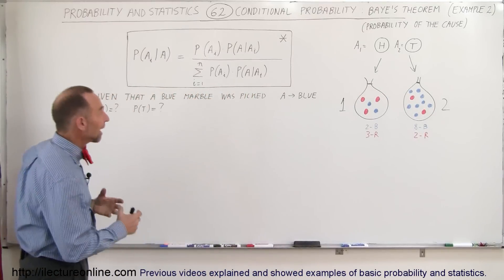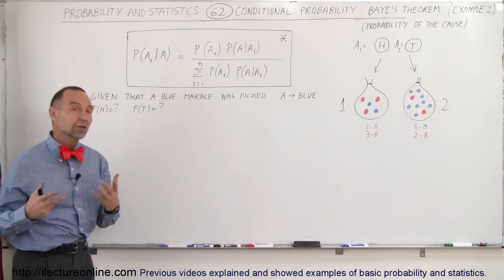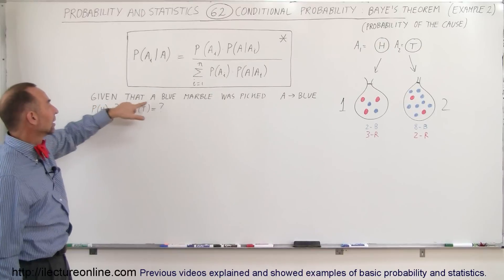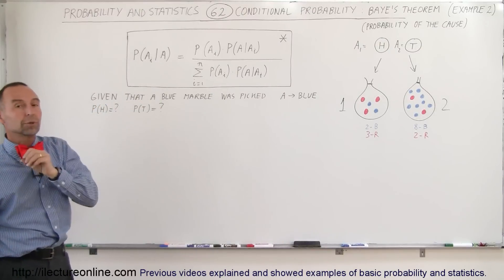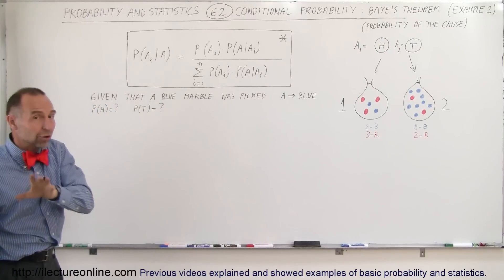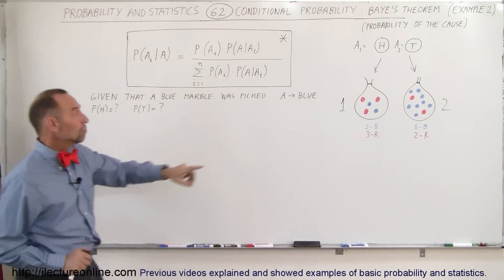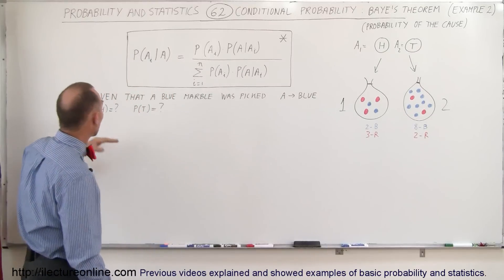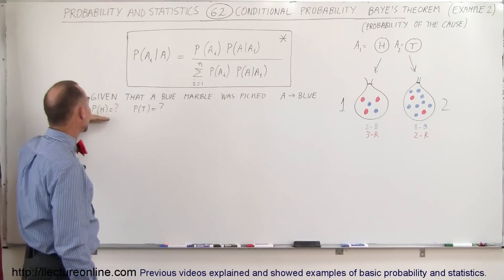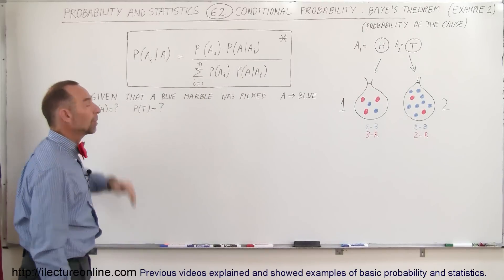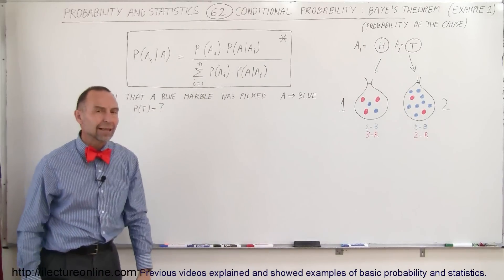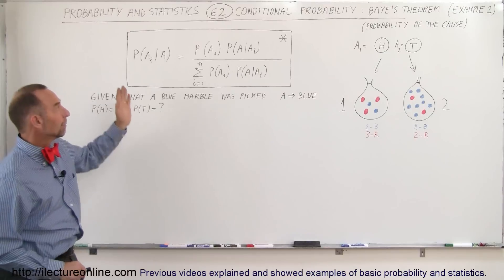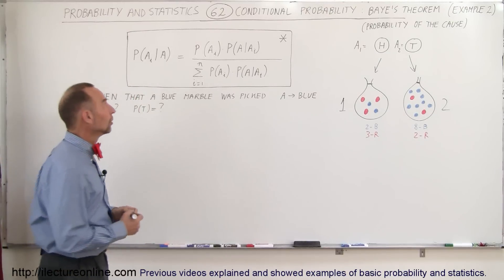Now imagine that we have some prior knowledge about the outcome of the second event. Given that we pulled a blue marble out of one of the two bags — we don't know which one — event A is blue. Then what was the probability that we threw heads, and what is the probability that we threw tails on the coin? Bayes' Theorem should allow us to determine that.